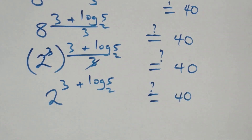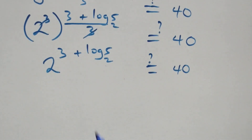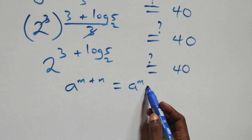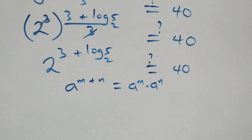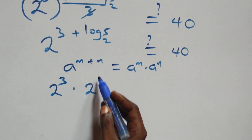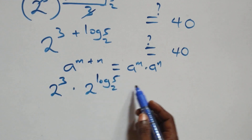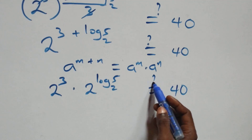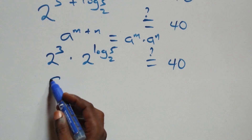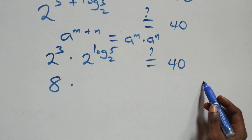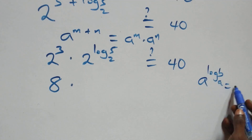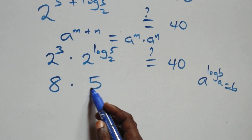Using the exponent law a raised to power m plus n equals a raised to power m times a raised to power n, we get 2 raised to power 3 times 2 raised to power log₂5. Then using the identity a raised to power log base a of b equals b, we have 8 times 5. Is this equal to 40?